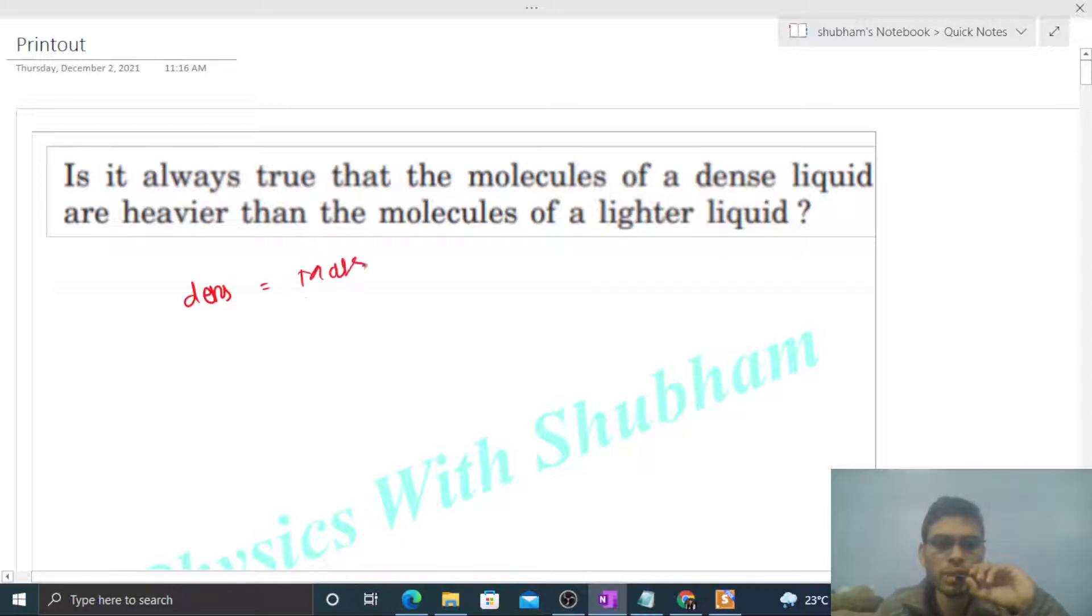Density is mass of one molecule times number of molecules divided by volume. So this is mass of one molecule times number of molecules per unit volume. That is m times small n, where m is the mass of one molecule.